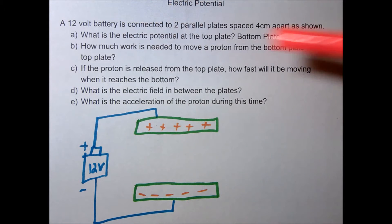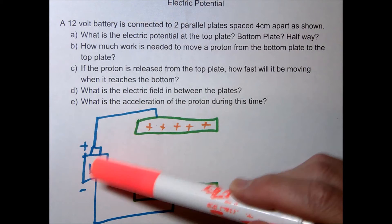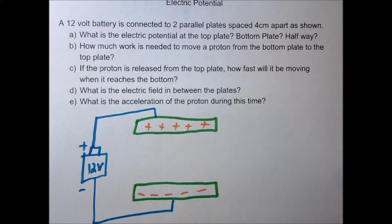Let's take a look at the very first question. Basically what I've done is I've taken two parallel plates, I've hooked up a 12 volt battery here giving this a positive charge, giving this a negative charge.